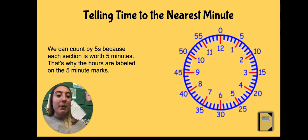And remember, we count by fives only because each section is worth five minutes. There are five little lines from the 12 to the 1, five little lines from the 1 to the 2. So it's easier for us to skip count by fives to figure out what minute is on the clock.